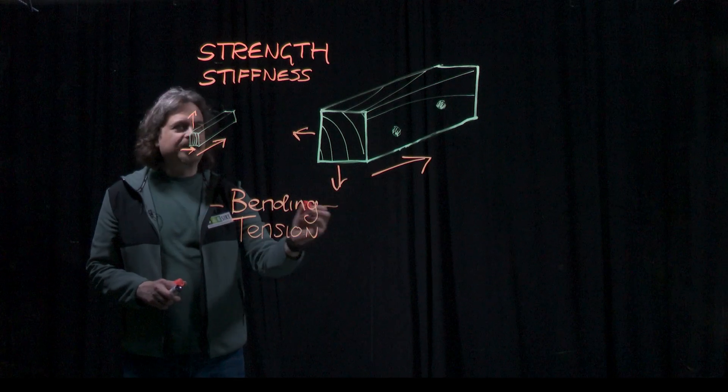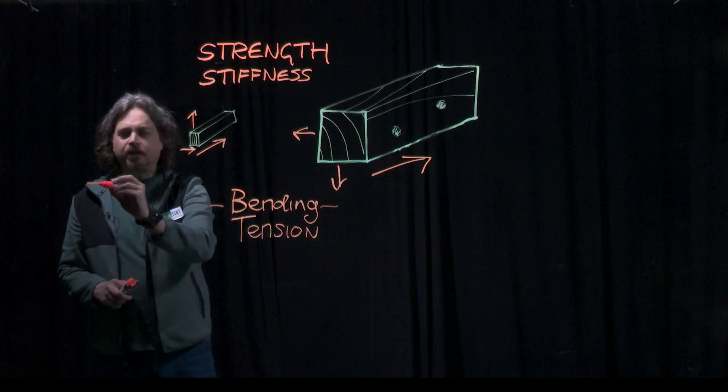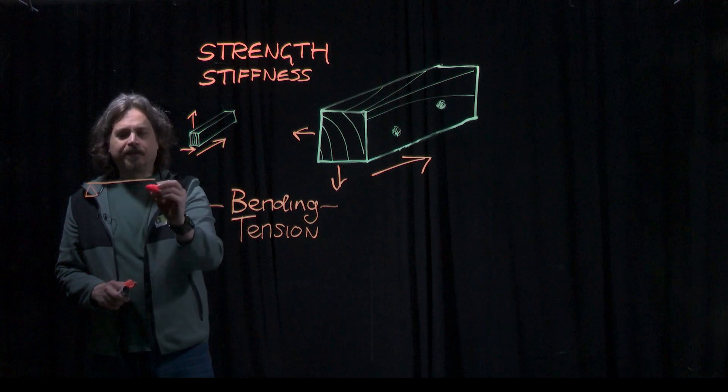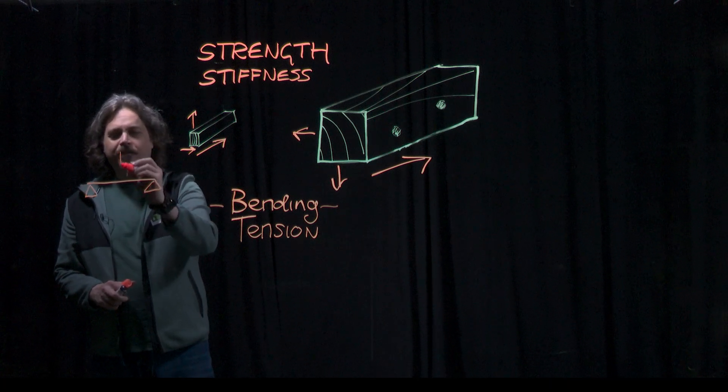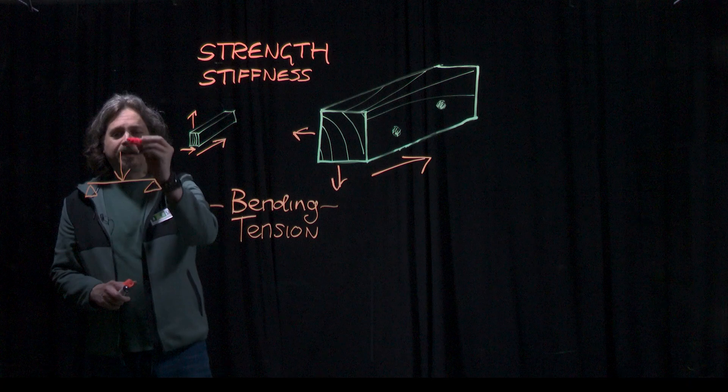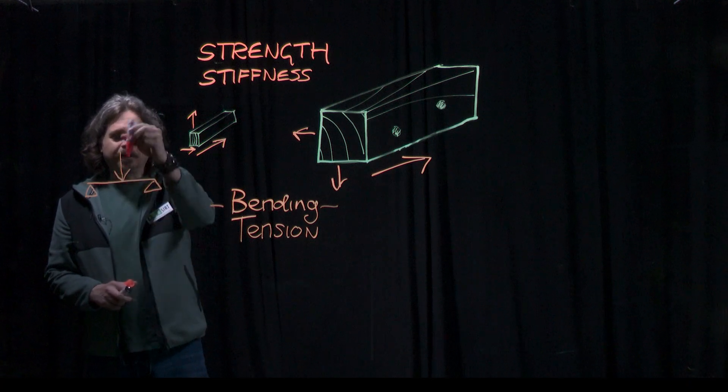For bending tests in small clears, commonly we're doing something called a three-point bending test. That's two points where the specimen is supported and one point in the middle where the load is applied.